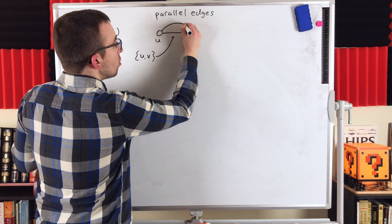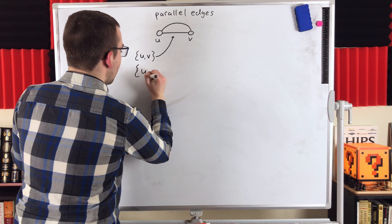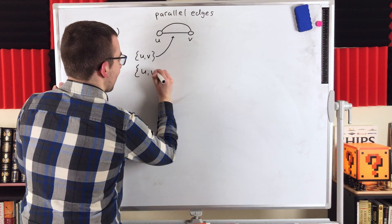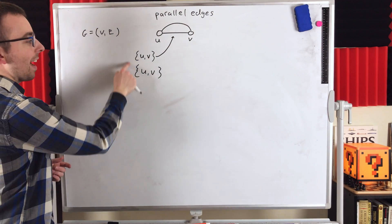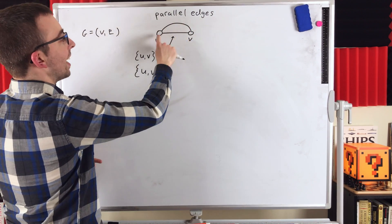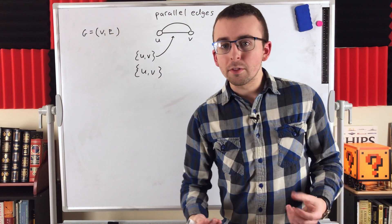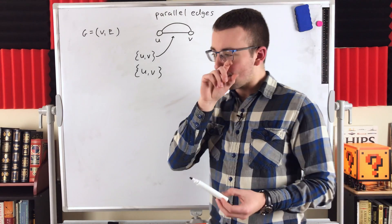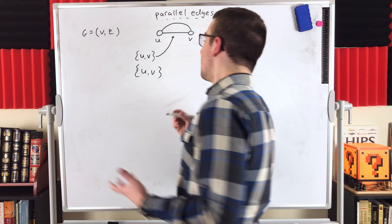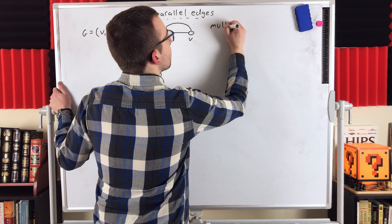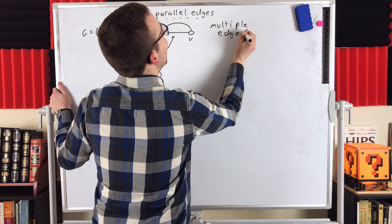If we had another edge joining vertex u to vertex v, by our definition of edge it would just be the same exact thing: the set containing u and v. A simple edge set has no way to capture that there are two identical edges joining u and v. Two edges like this, as you might have guessed, are called parallel edges — or they're also sometimes called multi-edges or multiple edges.